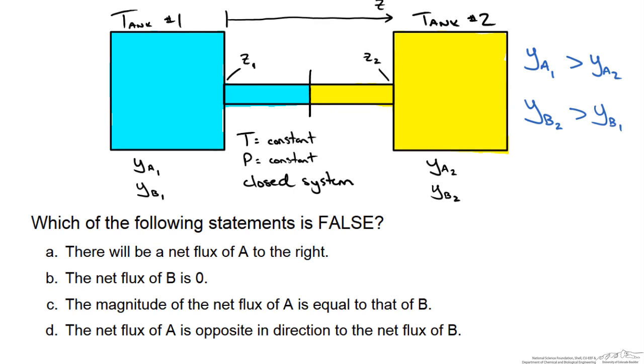When this system is opened and the mixtures come in contact with each other, which of the following statements is false? A: There will be a net flux of A to the right. B: The net flux of B is 0. C: The magnitude of the net flux of A is equal to that of B. Or D: The net flux of A is opposite in direction to the net flux of B.